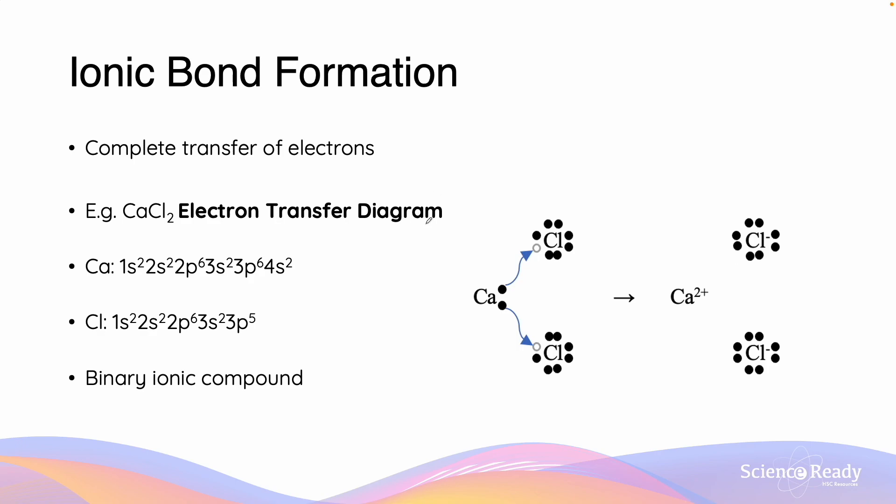Ionic bonds are formed from the complete transfer of electrons to form ions. These ions would be the cations and the anions. We have an electron transfer diagram of Ca and 2Cl to demonstrate the formation of CaCl2. If we consider the SPDF configuration of Ca, what we can see is that there are two valence electrons in the 4s orbital. Considering the configuration of Cl, we can see that they are both one electron short of the s2 p6 valence shell configuration.